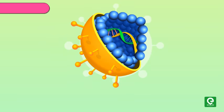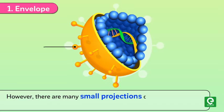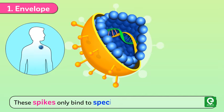Number one: envelope. It is the outer thin loose covering composed of proteins from the virus and lipids and carbohydrates from the host. There are many small projections called spikes present on the virus envelope. These spikes bind only to specific receptors on the host cell.